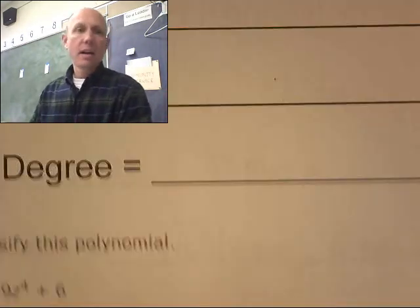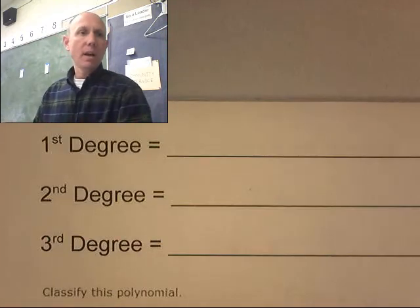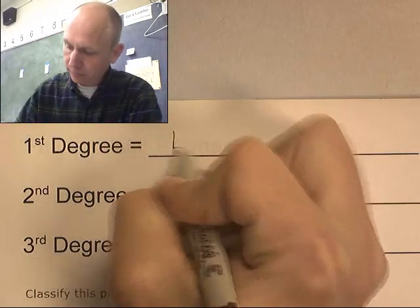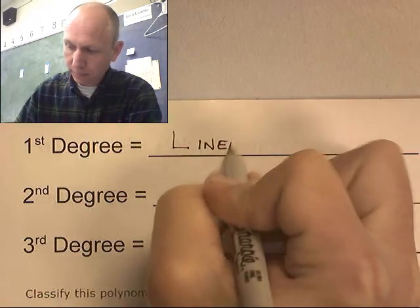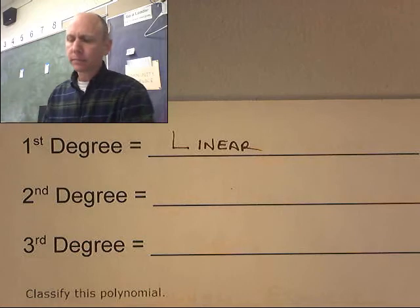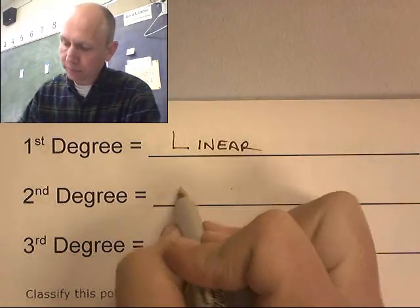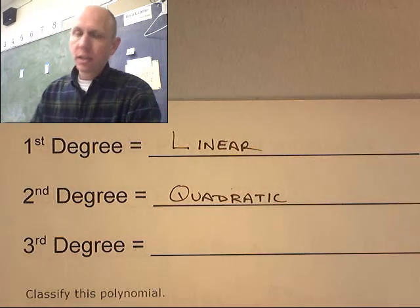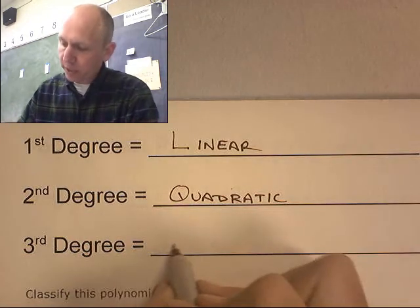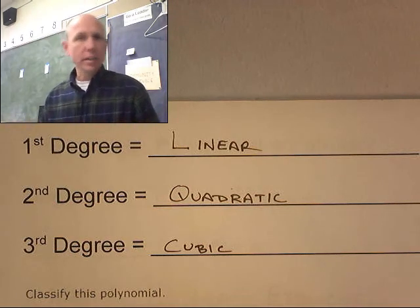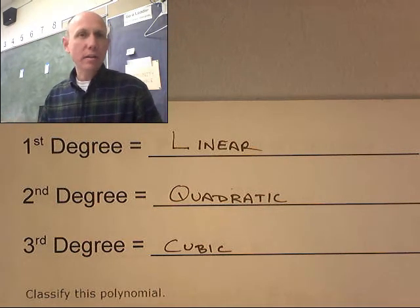Now, these guys get a little bit more specific. When we look at these, a first degree polynomial is called a linear. And that's because when you graph a first degree, it makes a line. A second degree is called a quadratic. And a third degree is called a cubic. So, I just look at the degrees, and I can determine what to call the equation.